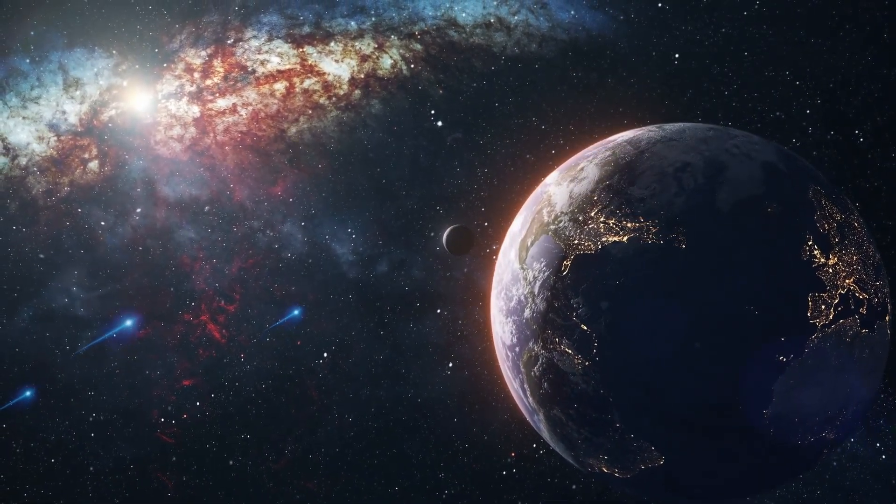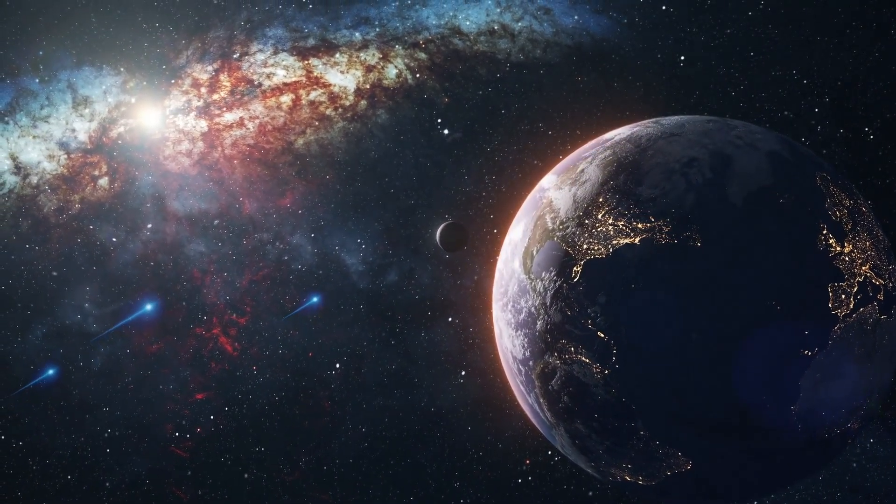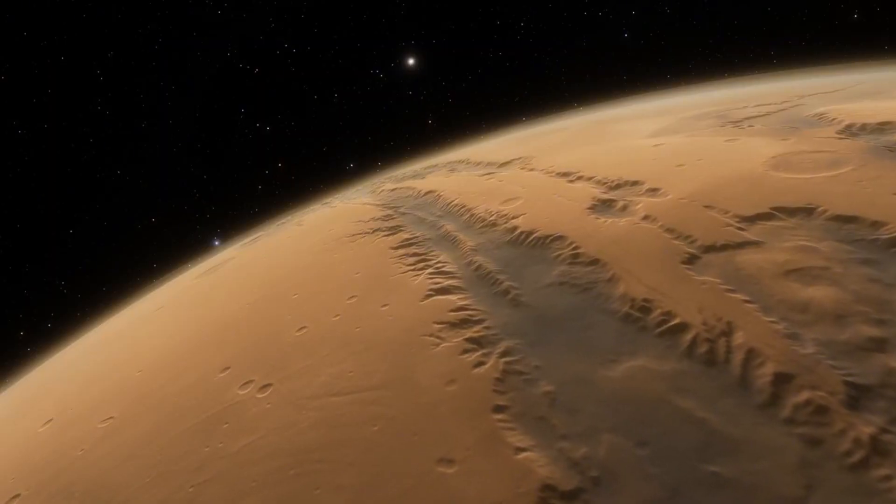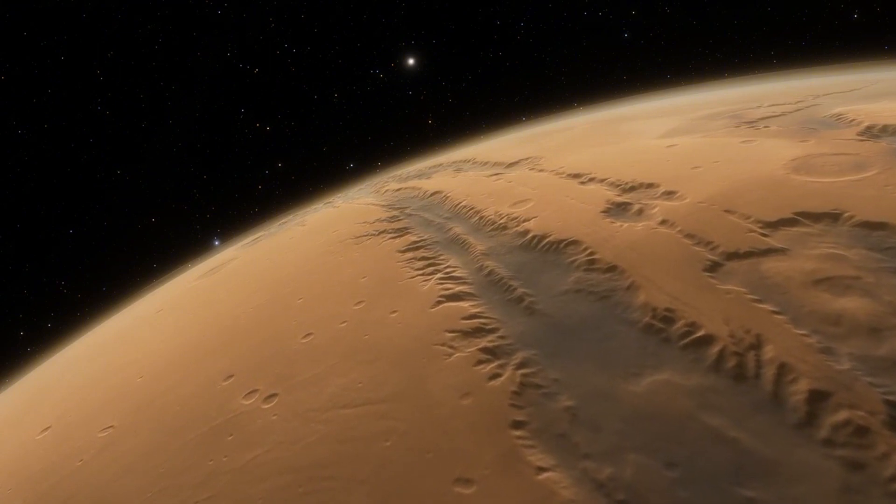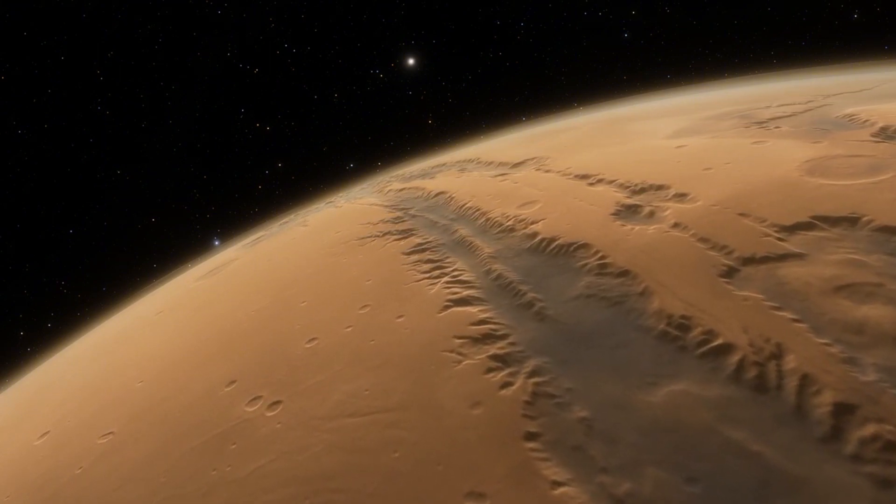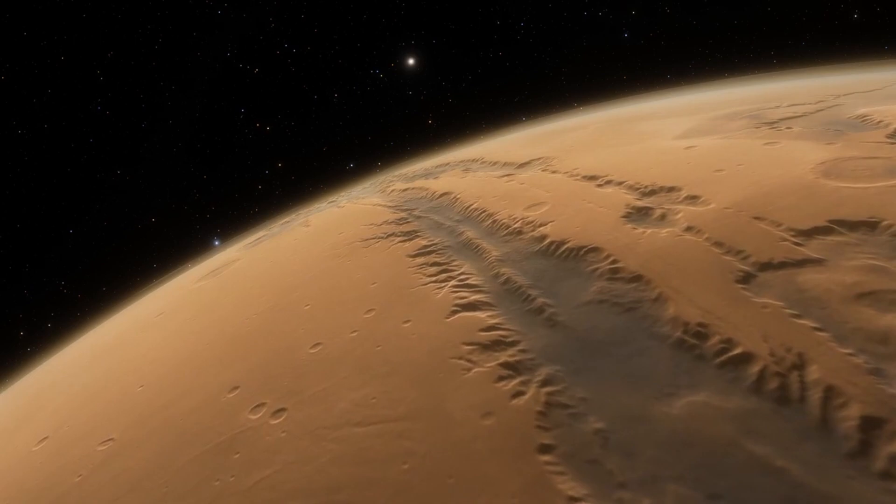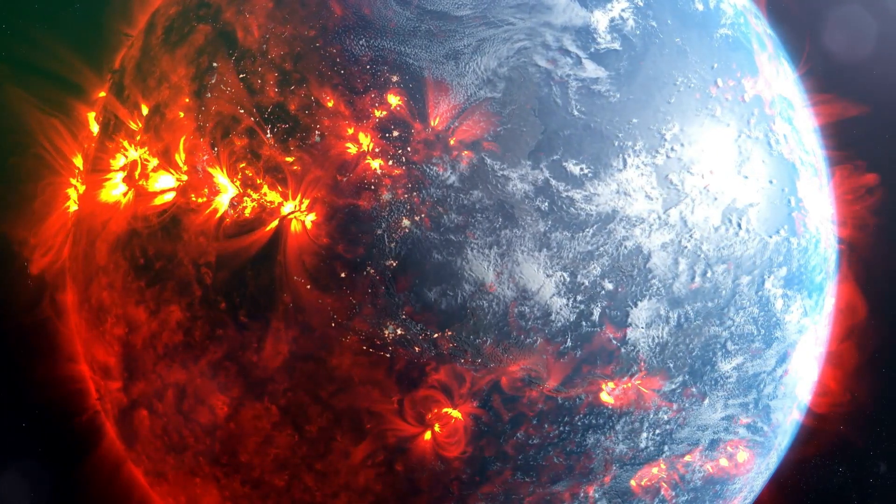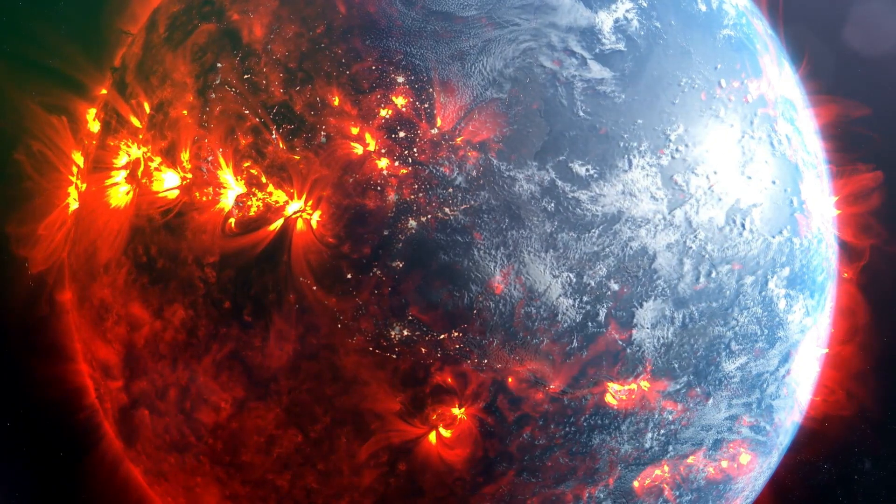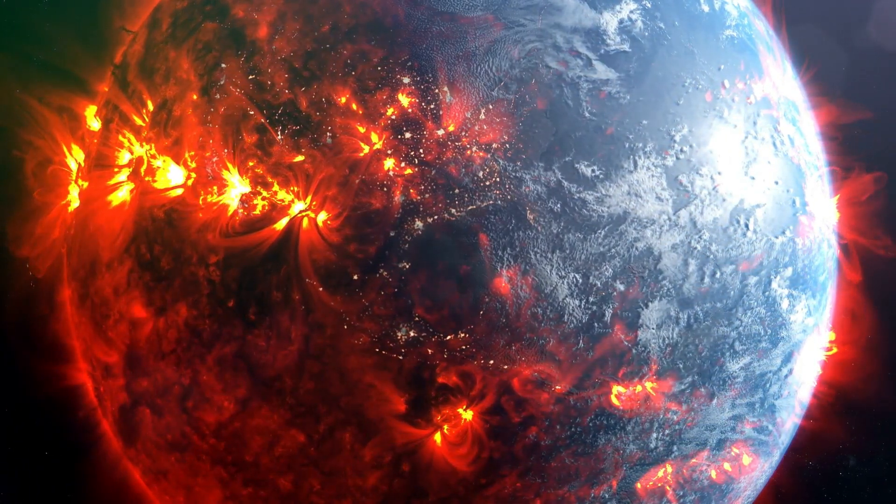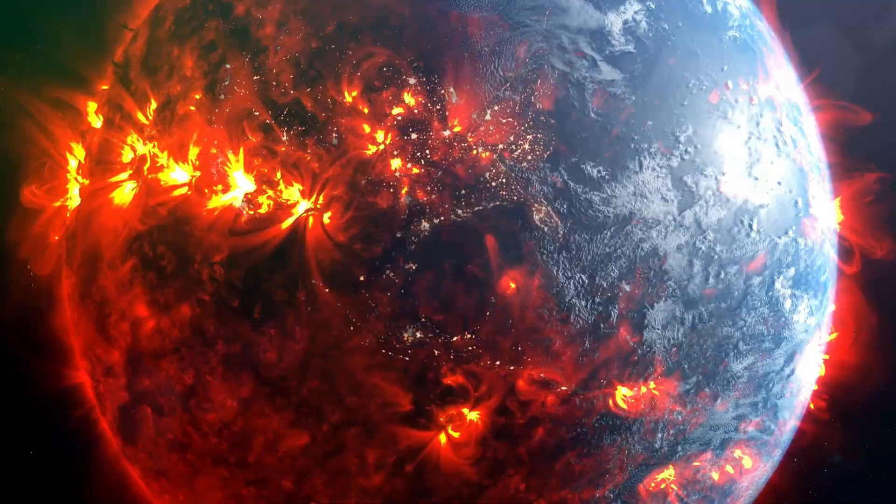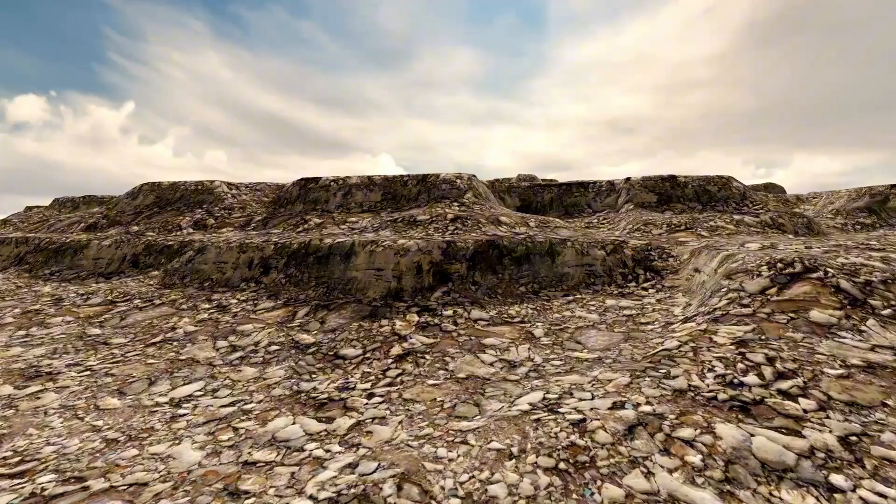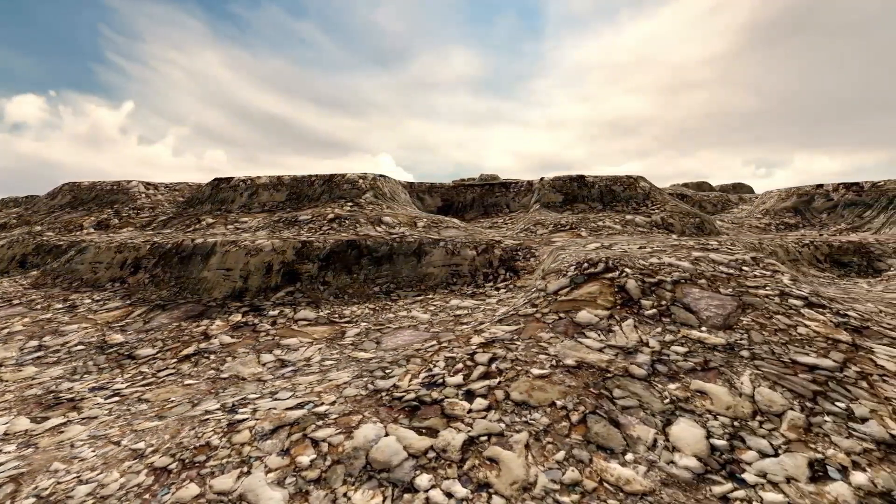Pluto's journey around the Sun is marked by unparalleled characteristics within our solar system. Its orbit spans an extensive 248 years, and since its discovery in 1930, Pluto has yet to complete a full revolution. Adding to its intrigue is the highly elliptical shape of its orbit, a departure from the nearly circular orbits of major planets. Additionally, Pluto's orbit is inclined at 17 degrees to the ecliptic plane, making its path steeper compared to other planets.